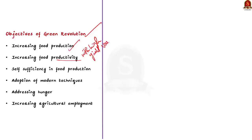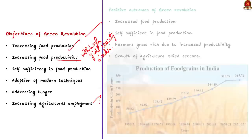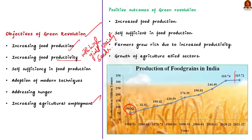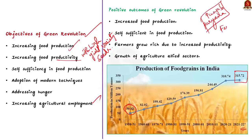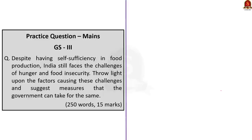Other important objectives of the Green Revolution include adoption of modern techniques, addressing hunger, and increasing agricultural employment. As seen in the graph, India's food production increased tremendously due to the Green Revolution, making India self-sufficient in food grain production. Increased productivity also helped farmers economically. Big landowners, mainly in Punjab and Haryana, became extremely rich. Agriculture-allied sectors like the fertilizer, tractor, and pump industries also witnessed growth.